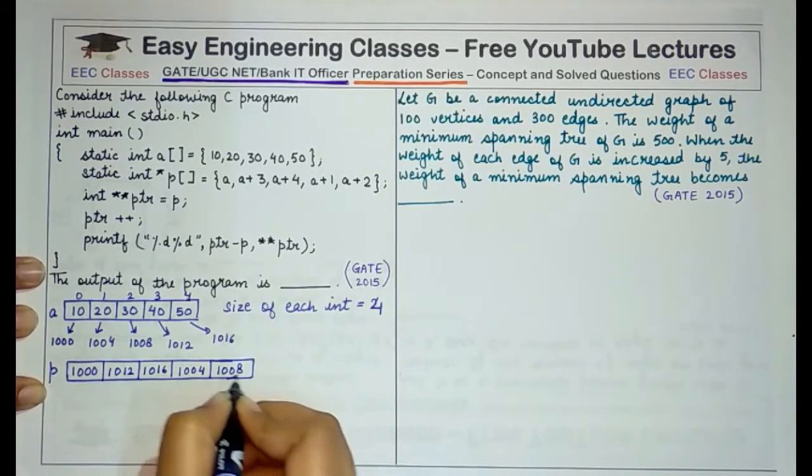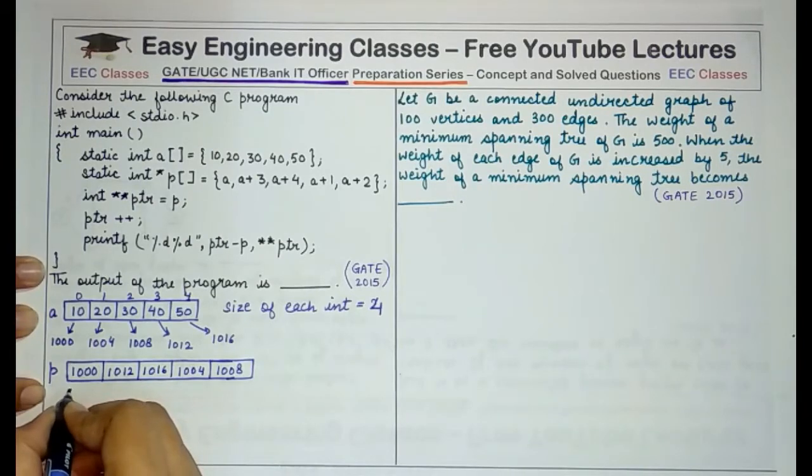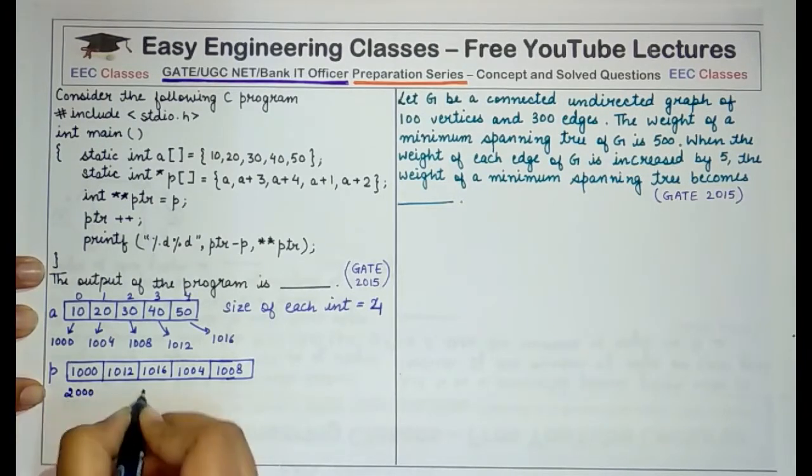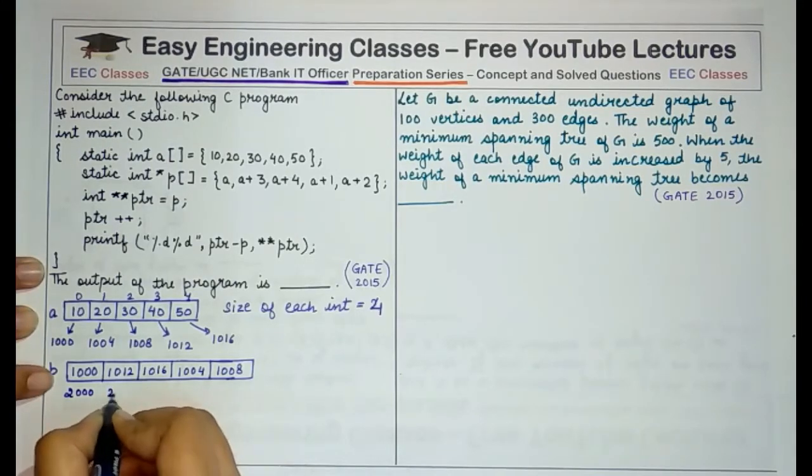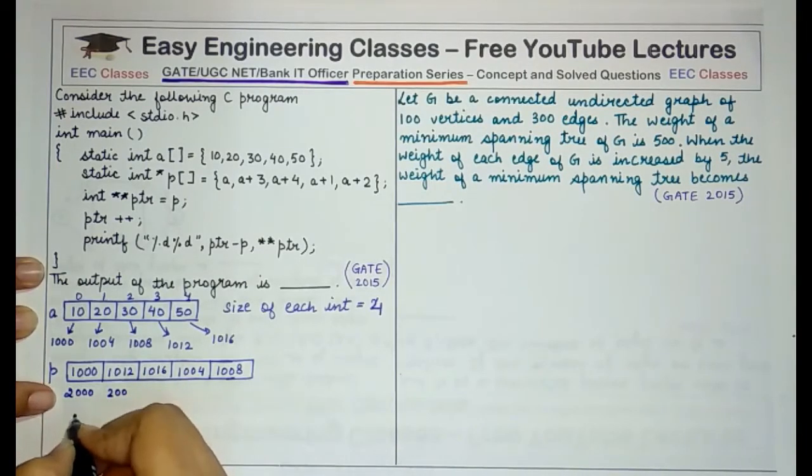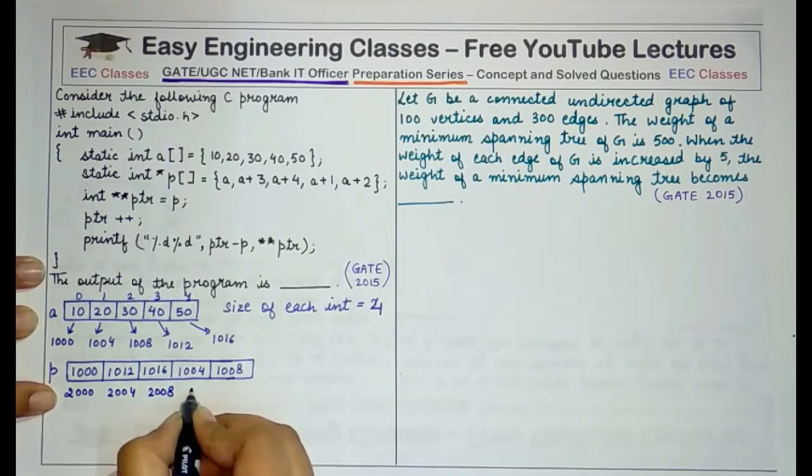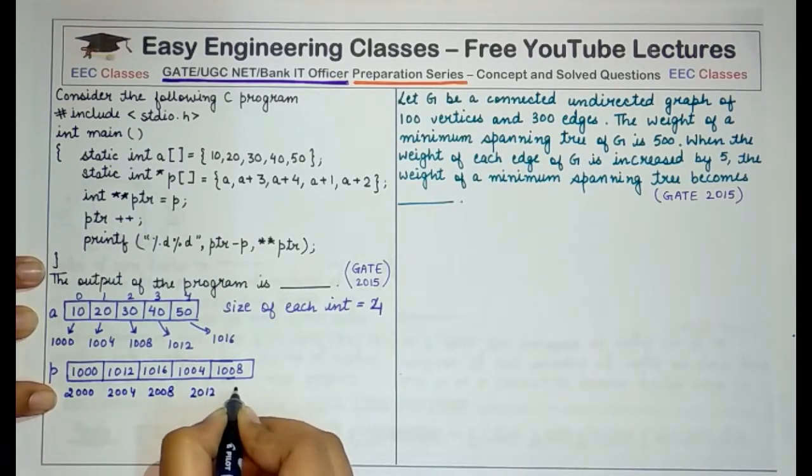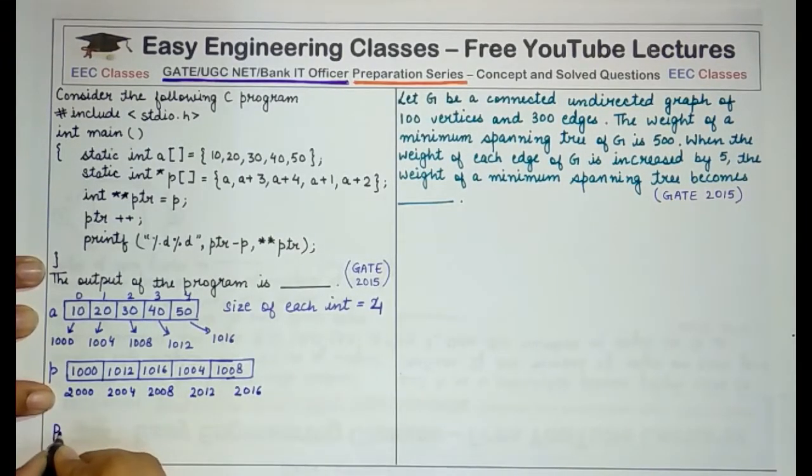Now since pointer stores various addresses of different variables, but a pointer would also have its own addresses. Now since it is a pointer to an integer, therefore the size of each value would also be 4. So the first value, let's assume that it has an address of 2000, then 2004, then 2008, then 2012 and then 2016.